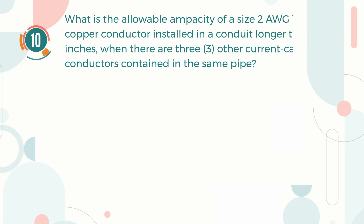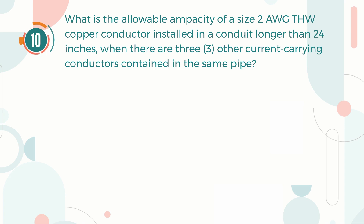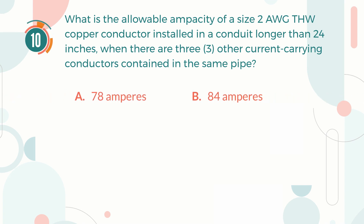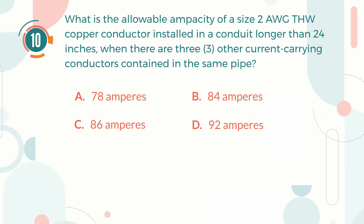Number 10. What is the allowable ampacity of a size 2 AWG THW copper conductor installed in a conduit longer than 24 inches, when there are three other current-carrying conductors contained in the same pipe? A. 78 A. B. 84 A. C. 86 A. D. 92 A.